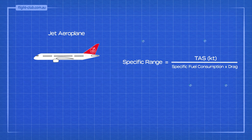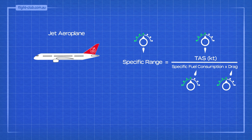The higher the true airspeed and the lower the power required, the greater the specific range. To maximise the range of a jet aeroplane, true airspeed must be high, but at the same time, specific fuel consumption and drag must be low.